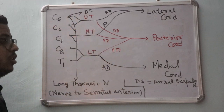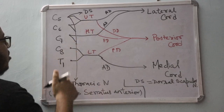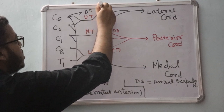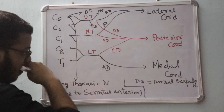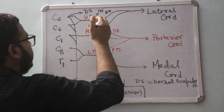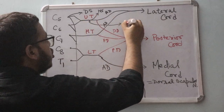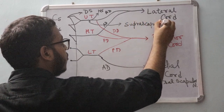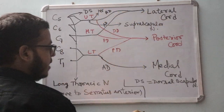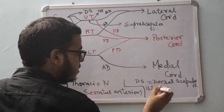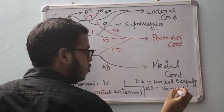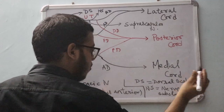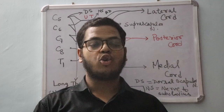The trunks have only two branches, and both come from the upper trunk. One branch is the nerve to subclavius and the other is the suprascapular nerve. These are the branches from the roots and the trunk. Divisions do not give any branches.